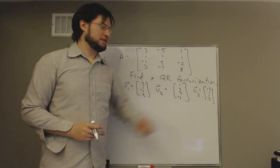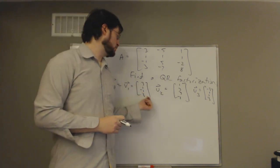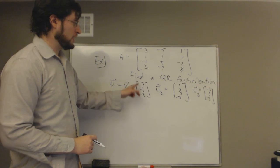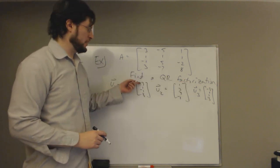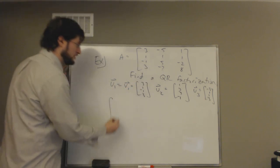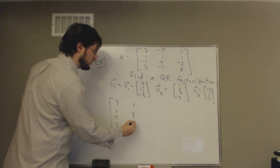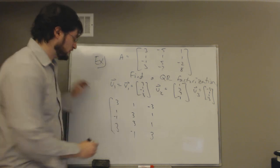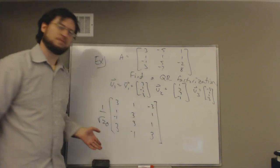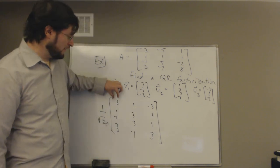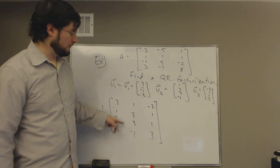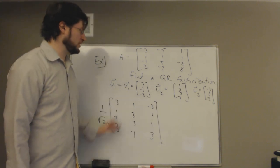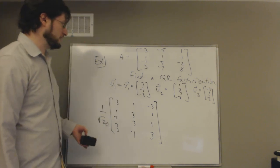Now, Q is the matrix with columns U1, U2, U3, but we must normalize them to make unit vectors. Conveniently, each vector has the same length: √(9+1+1+9) = √20. So Q = (1/√20) times the matrix with columns (3, 1, −1, 3), (1, 3, 3, −1), (−3, 1, 1, 3). In general the columns may have different lengths and we'd divide each column by its own length.